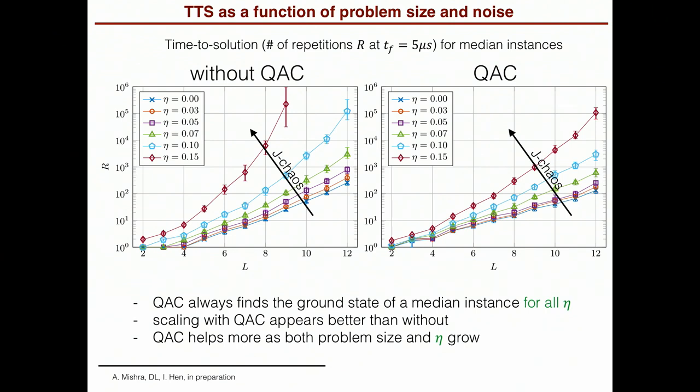What's more, at the highest noise level, we always solve every instance as I already showed you. And moreover, the effect of quantum annealing correction is more significant. It helps more as both the problem size grows and as the amount of J-Chaos grows. All right. So the conclusion here so far is that with this very simple idea of the simplest type of quantum annealing correction code, we can already do something about J-Chaos.